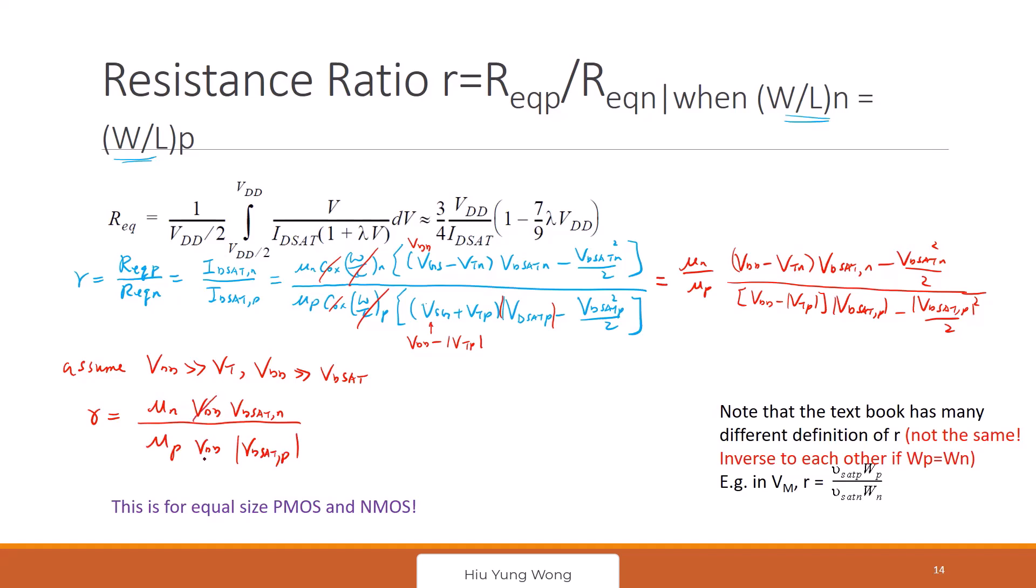Okay, and of course VDD got cancelled again, so this is the R when the resistance ratio of two transistors, PMOS and NMOS, when they have the equal size. We can further—if you remember we mentioned before—saturation velocity is just equal to the L times the E critical.